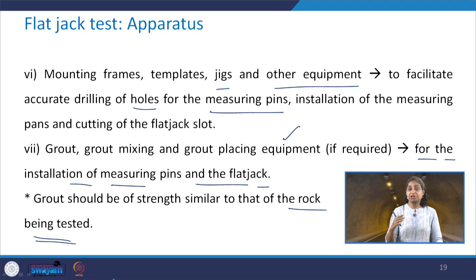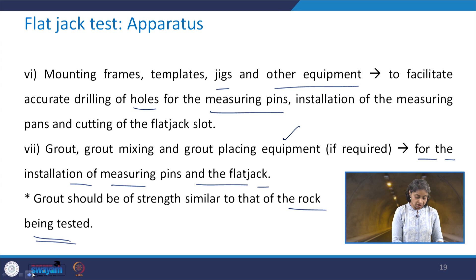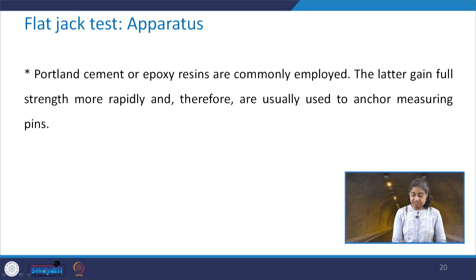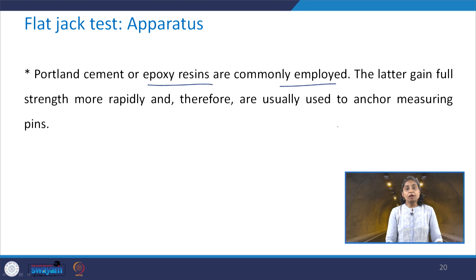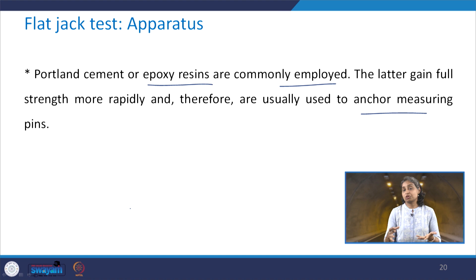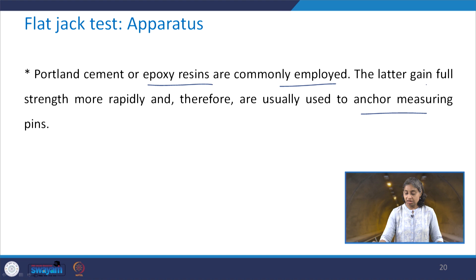Other apparatus components include mounting frames, templates, jigs and other equipment used to facilitate accurate drilling of holes for measuring pins, installation of measuring pins, and cutting of flat jack slots. Finally, there is grout, grout mixing and grout placing equipment if needed, for installation of measuring pins and the flat jack. The grout should be of strength similar to that of the rock being tested — not weaker nor stronger — because if it fails early when the flat jack exerts pressure, the correct in situ stress value will not be obtained. Portland cement or epoxy resins are commonly employed; epoxy resins gain full strength more rapidly and are usually used for anchoring the measuring pins.